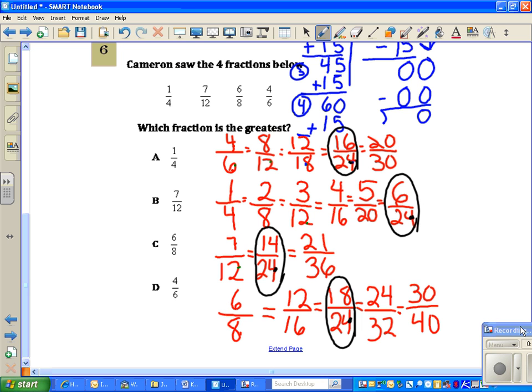So now I just need to look at the numerators and look at which is the highest numerator. I have sixteen, six, fourteen, and eighteen. So eighteen is the highest numerator. So eighteen twenty-fourths means that six-eighths is the largest fraction. So my letter answer choice is C.